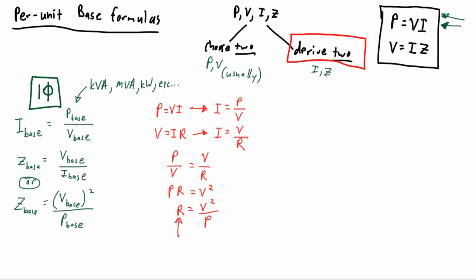We can use the combination to solve for resistance or impedance. R can be Z, so we see in this final derivation that we have the same formula as the other base derivation formula. With just these three formulas, we can derive any of our four bases based upon which two were selected in any single phase problem requiring the per unit method.